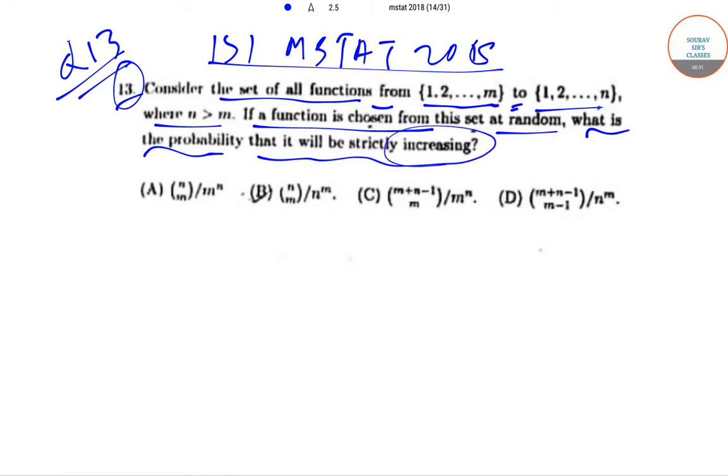The options are: (A) nCm/m^n, (B) nCm/n^m, (C) (m+n-1)Cm/m^n, and (D) (m+n-1)C(m-1)/n^m. So these are the four options that are available.